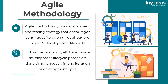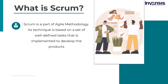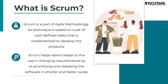In this methodology, all the software development lifecycle phases such as planning, building, integrating, testing, deploying, and maintaining are done simultaneously in one iteration or development cycle. Scrum is a part of Agile Methodology. Its technique is based on a set of well-defined tasks and activities that have to be implemented to develop the products. Scrum helps teams adapt to the user's changing requirements by re-prioritizing the important tasks and releasing the software in shorter and faster cycles while allowing the team to learn and improve.